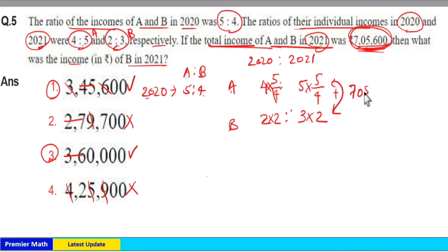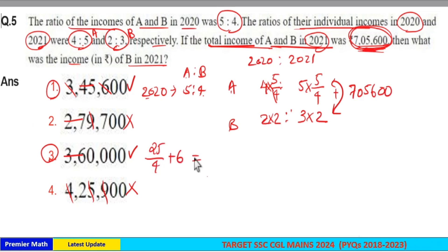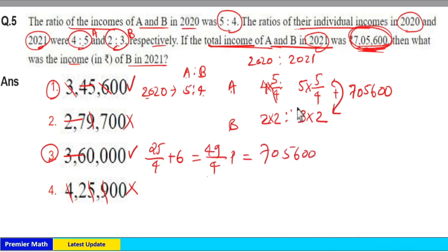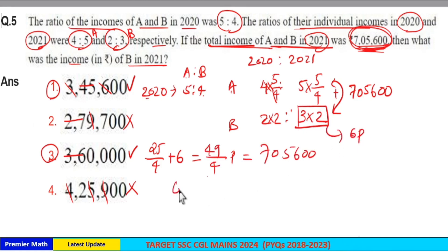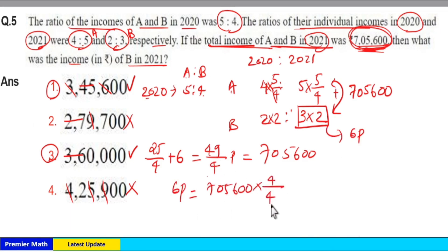Now 25/4 + 6 parts equals 7 lakh 5600, as given. 25/4 + 6 = (25 + 24)/4 = 49/4. So 49/4 parts = 7 lakh 5600. The income of B in 2021 is 6 parts, which equals 7 lakh 5600 divided by (49/4), written as (4/49) × 6 parts.